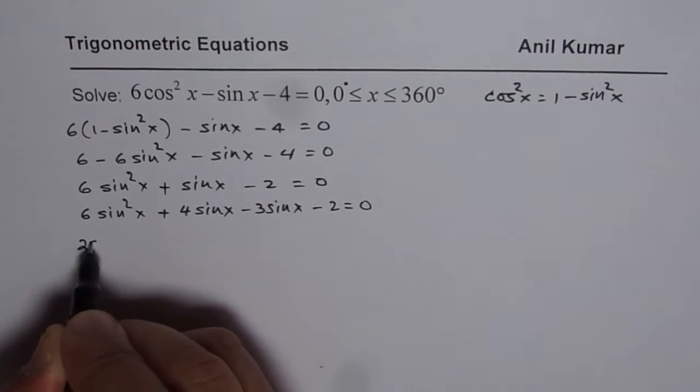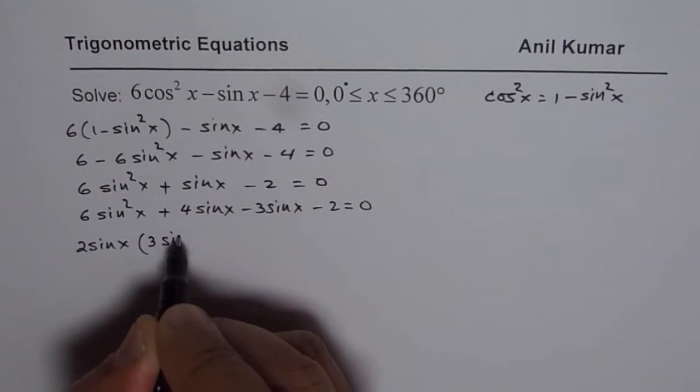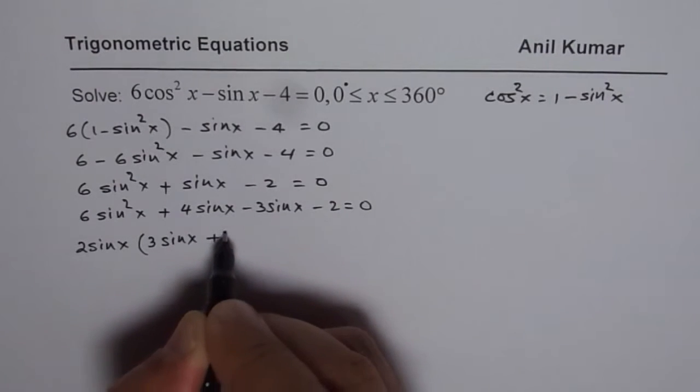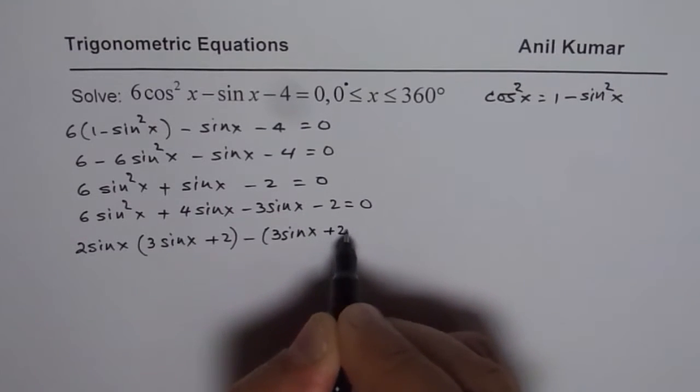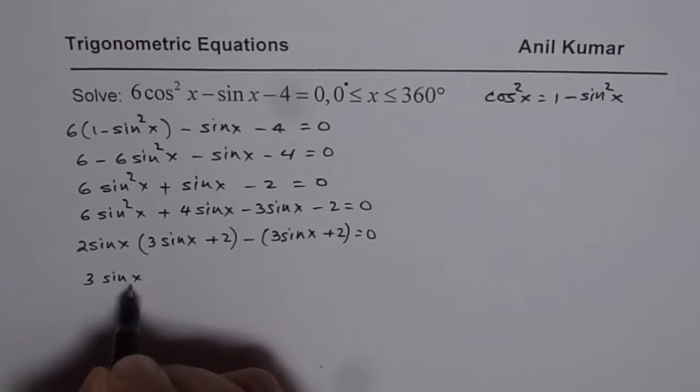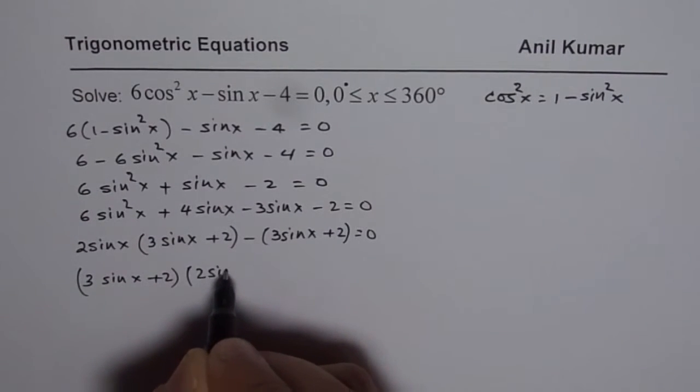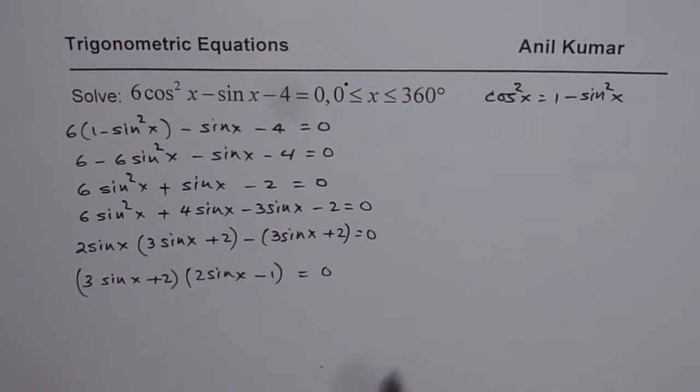Combine first two terms. 2 sin x is common. So we get 3 sin x plus 2, plus 2 minus 3 sin x plus 2 equals to 0. 3 sin x plus 2 is common. 2 sin x minus 1 equals to 0. So that gives us two sets of solutions.